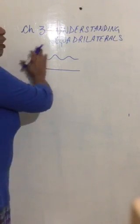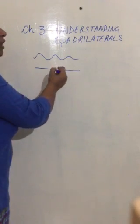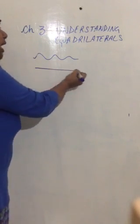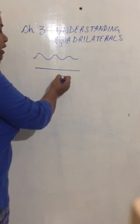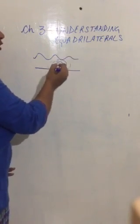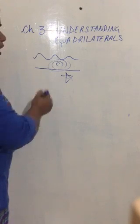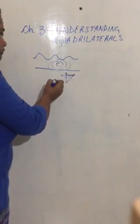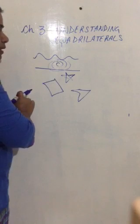Any figure drawn on a plane — so this board is a plane — any figure which can be drawn on a plane without lifting pen or pencil is called a curve. So when I was drawing this line, I did not lift my marker. While I drew this curve, I did not lift my marker. So anything which I draw without lifting what I am drawing can be called a curve. All of these are curves.